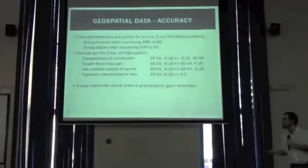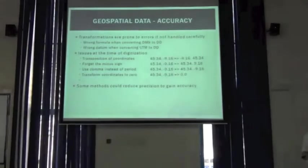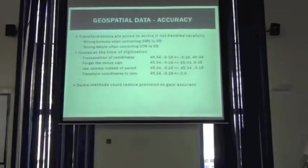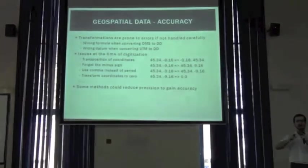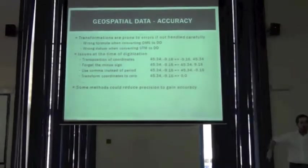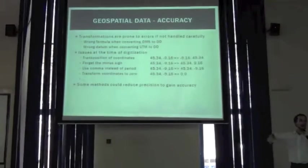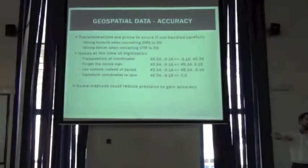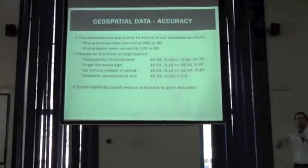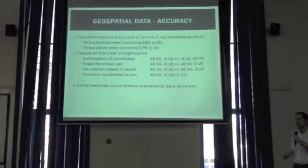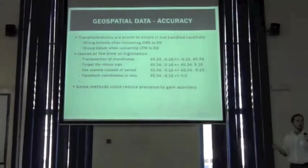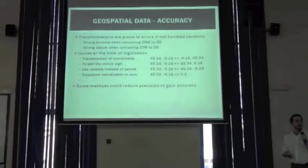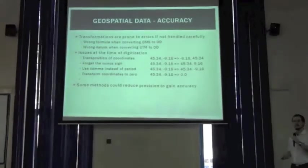There are some methods that might reduce precision in order to gain accuracy. We may blur geospatial information, the coordinates, enough to encompass both the inaccurate values and the possible right value. That might be seen as an improvement of the quality of the data. The range of possible uses is narrower, but still useful at certain points.